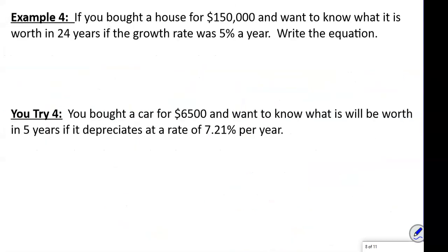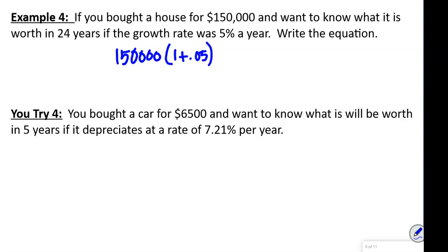Example 4 says: if you bought a house for $150,000 and wanted to know its value in 24 years at a growth rate of 5% per year, write the equation. That's 150,000 times (1 plus 0.05) to the 24th power. Putting that in the calculator gives $483,764.99.